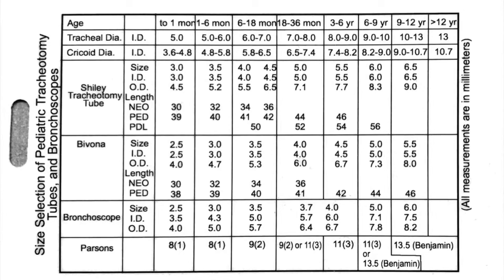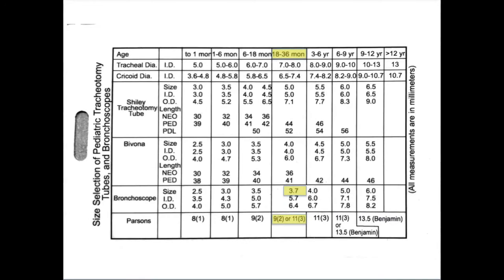This airway reference card shows normal sizes for pediatric airways based on age, with associated tracheostomy tubes, bronchoscopes, and laryngoscopes for each age. In this example, a two-year-old patient would use a 3.7 bronchoscope and either a 9 or 11 Parsons laryngoscope. A Miller laryngoscope can be used in place of a Parsons laryngoscope.